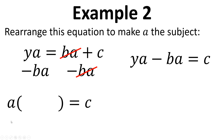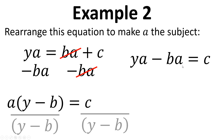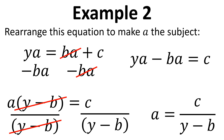We now need to factorise and take A outside of the brackets. So we've got A open brackets, and we need to put two terms in here that if we were to multiply them back out we'd get back to YA minus BA. So we put Y in — multiplying A by Y gives back YA — and minus B, so multiplying A by minus B gives the minus BA term back. We're now going to divide both sides by Y minus B in brackets, so they cancel on the left hand side and we're left with A equals C divided by Y minus B.